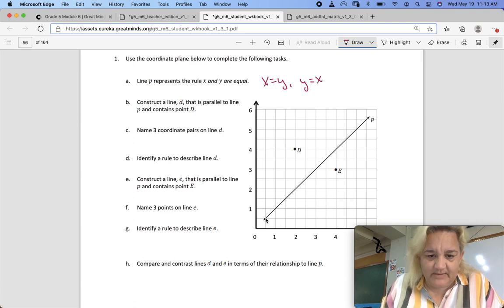So here we've got 1, 1, 2, 2, 3, 3, 4, 4. All the coordinates are identical.